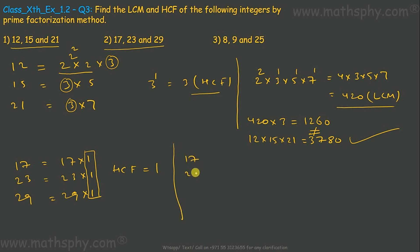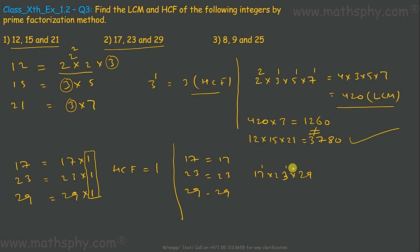For the LCM of 17, 23, and 29, we take all the prime numbers. The greatest power of each is 1, so LCM = 17 × 23 × 29.